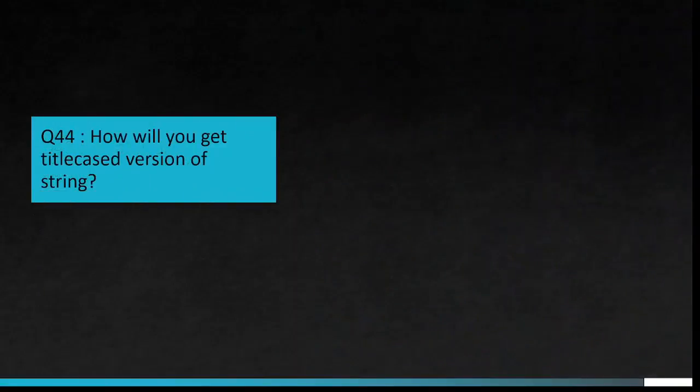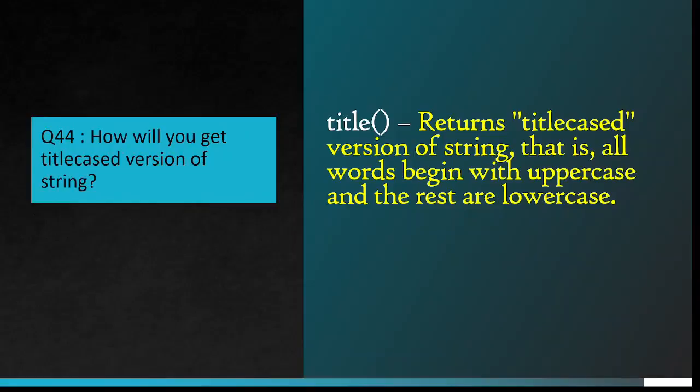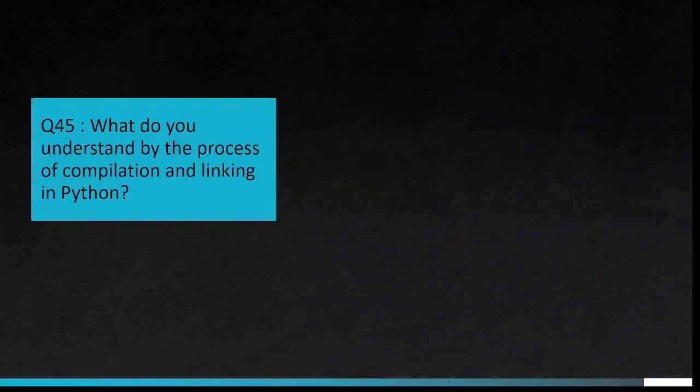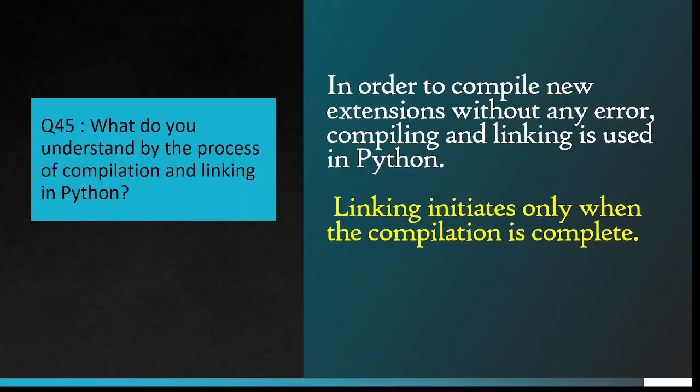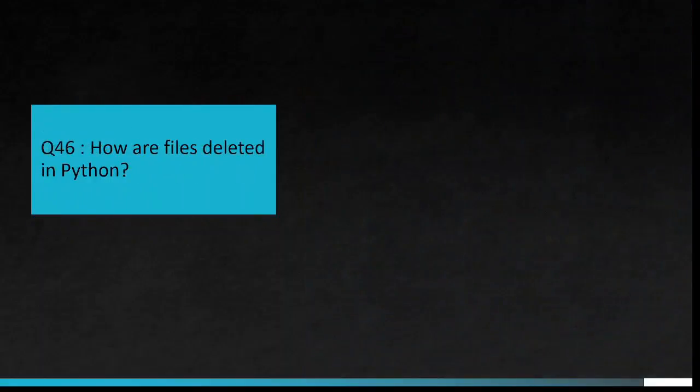Question number 44: How will you get title cased version of string? title() returns title cased version of string, that is, all words begin with uppercase and the rest are lowercase. Question number 45: What do you understand by the process of compilation and linking in Python? In order to compile new extensions without any error, compiling and linking is used in Python. Linking initiates only when the compilation is complete.